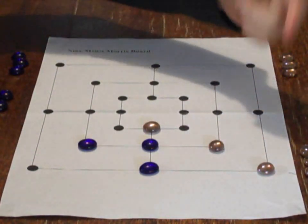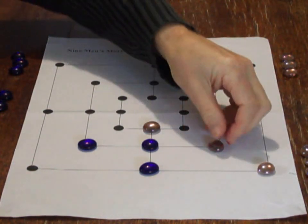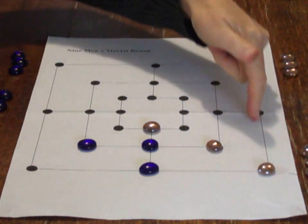Blue may continue with their strategy of trying to make threes by playing there, white will block. Now, this shows another aspect of the game. The row of pieces, the three in a row, must be along the lines.